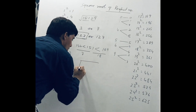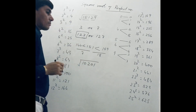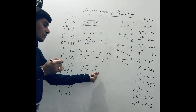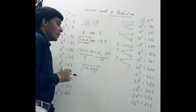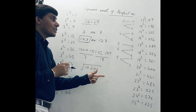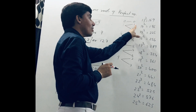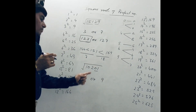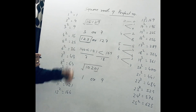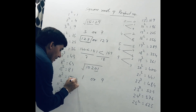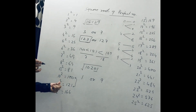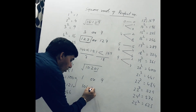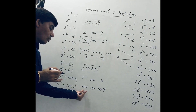Find the square root of 10201 — again a 5-digit number. Same process: pairing the number gives first pair 01 and then 102. The last digit is 1, so after finding the square root, the last digit is either 1 or 9. We write 1 or 9. Then 102 lies between 100 and 121 — that means between 10² and 11². The lowest value is 10. So we write 10, 1 or 10, 9 — giving possibilities 101 and 109.